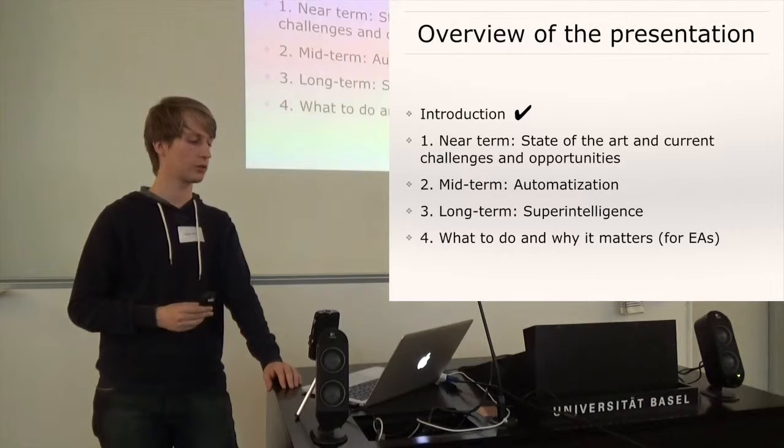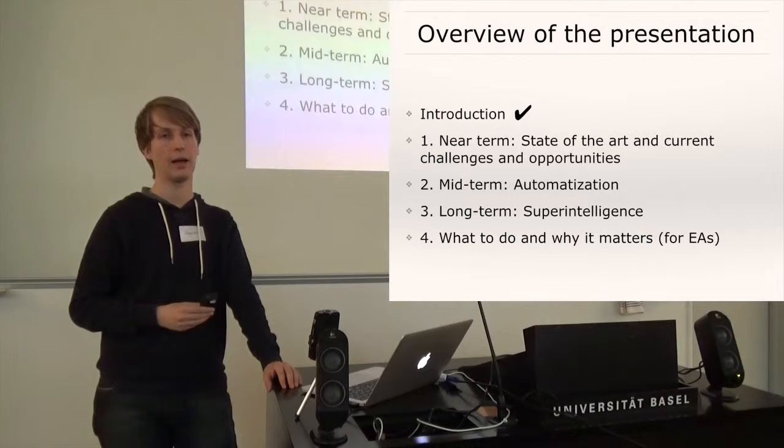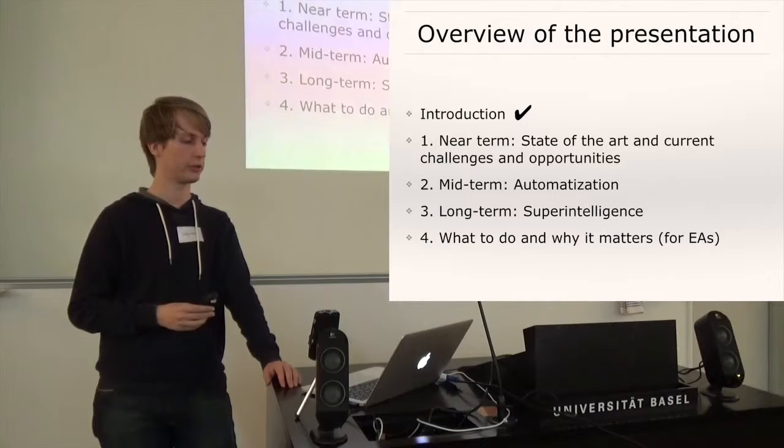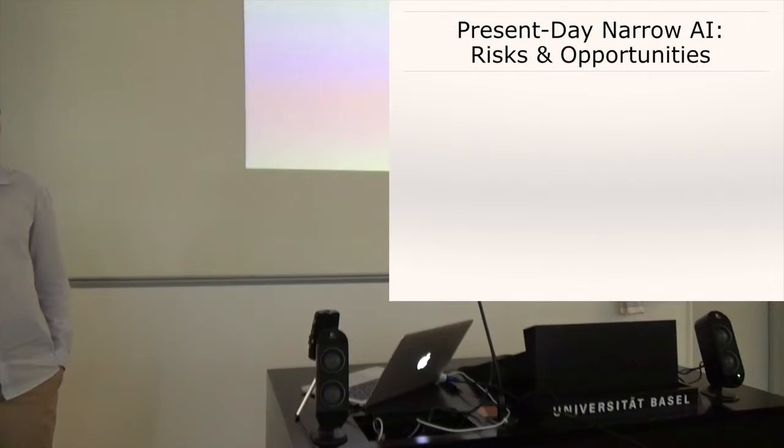And finally, I'm going to explain why the matter might be very relevant for EA and what we can do to ensure a positive outcome of AI research. Okay, thanks Lukas. In this part, I will just talk about currently employed narrow AIs or computer algorithms and their risks and opportunities. And with narrow AI, I just mean an AI that is designed or is good at only one domain and doesn't show intelligent behavior across many domains such as humans do.